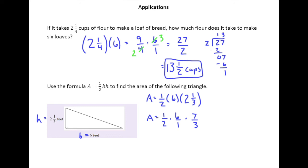So, we can see here that two and six share a two in common. So, two divided by two is one, six divided by two is three. And then, we can take this three and this three and divide top and bottom by three. Three divided by three is one. Three divided by three is one. And so, the only thing left on top is that seven.